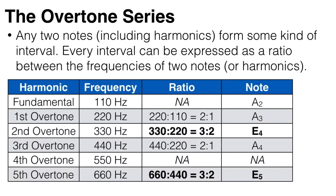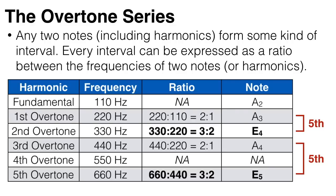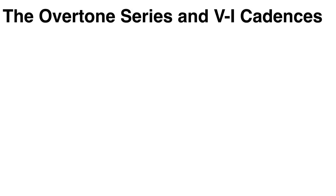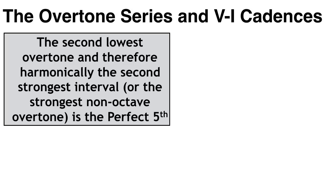Next, if we look at the second overtone and compare it to the first overtone we get 330 over 220, which gives us a ratio of 3 to 2. This is an interval of a perfect fifth. We find this same ratio between the fifth overtone and the third overtone — that is, 660 divided by 440. This means the fifth overtone is a perfect fifth above the third overtone, and we know that the third overtone is two octaves above the fundamental. So the second and fifth overtones must be the note E, a perfect fifth above the A.